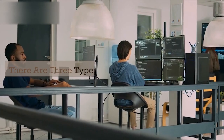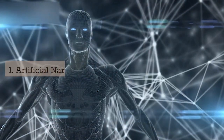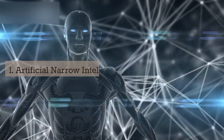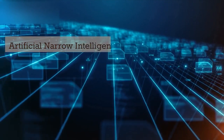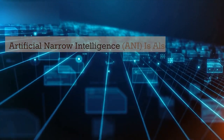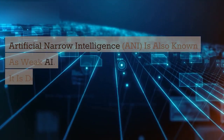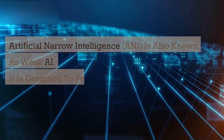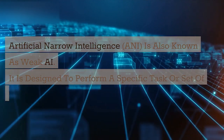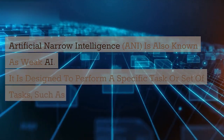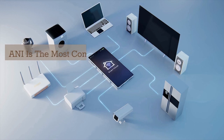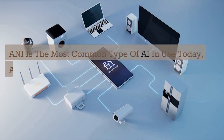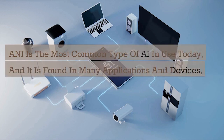One: Artificial Narrow Intelligence (ANI). ANI is also known as weak AI. It is designed to perform a specific task or set of tasks, such as playing chess or driving a car. ANI is the most common type of AI in use today and it is found in many applications and devices.